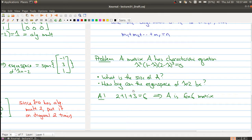And another question we can now ask is, how big can the eigenspace of lambda equal 2 be? And what we know is, from the fact that the geometric multiplicity is bounded by the algebraic multiplicity, the dimension of the null space of A minus 2i6 is less than or equal to 3.